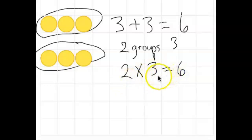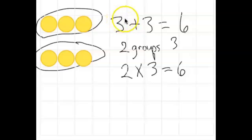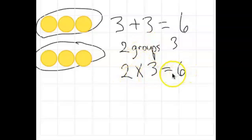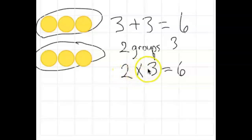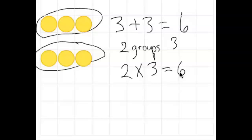Now let's stop and recognize some patterns here. We noticed that positive 3 plus positive 3 equals positive 6. When we look at the multiplication equation, a positive number of groups times a positive amount in each group — did that equal a positive or a negative? That did equal a positive, so that's something we need to make note of.